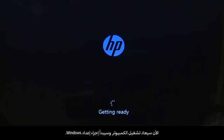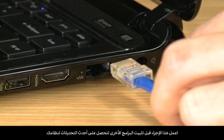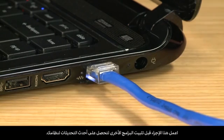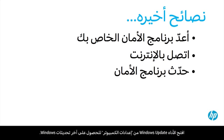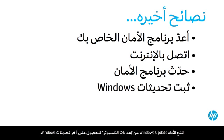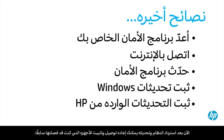Now, your computer will restart and begin the Windows setup process. After recovery, your computer is more vulnerable to security threats. Make sure you have security software installed before connecting to the internet. Once your computer is secure, connect to the internet. Do this before installing other software in order to get the latest updates to your system. After connecting, open your security software and get the latest updates, especially updates to virus definitions. Open the Windows Update tool in PC settings to get the latest updates for Windows. Open HP Support Assistant on the start screen to install the latest important updates from HP. Now that your system has been recovered and updated, you can reconnect and install devices that were unplugged previously.